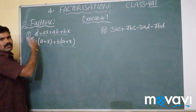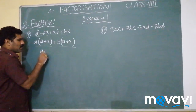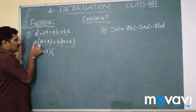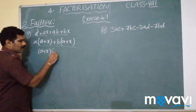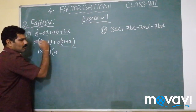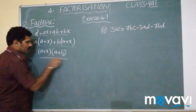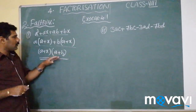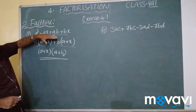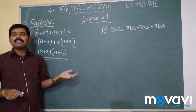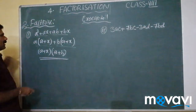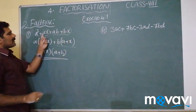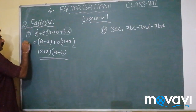Since A plus X is common, we need to take A plus X outside. So A plus X, and the remaining balance is A from the first term and plus B from the second term. This is the procedure — A plus X and A plus B are the factors of AX² plus AX plus AB plus BX. This is the first method.